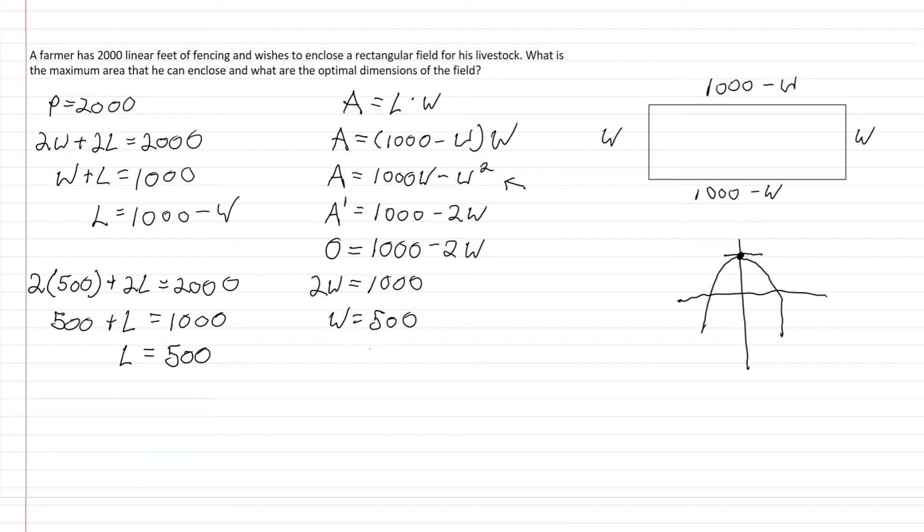Now for our final step, we need to find our area, which is length times width. So it'll be 500 times 500, or 500 squared, which equals 250,000 square feet.